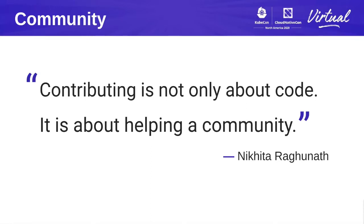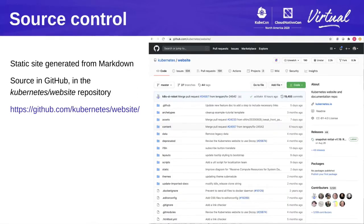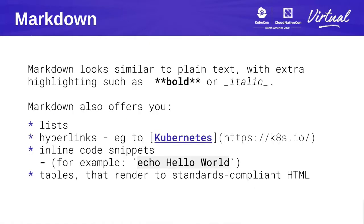In terms of technology, the Kubernetes website is a static site generated using Markdown from code that's on GitHub. Like a lot of Kubernetes projects, it's in the Kubernetes organization on GitHub, and the repository is called Website. Markdown is similar to plain text, but you add extra highlighting — for example, with asterisks or underscores. Basic Markdown also offers lists, hyperlinks, code snippets, and a few other things. We extend plain Markdown to add additional features.